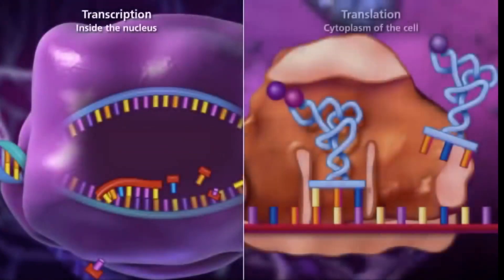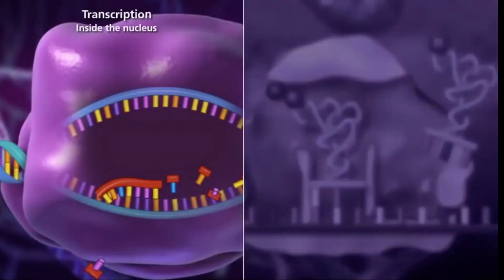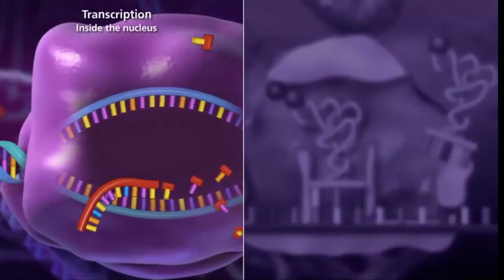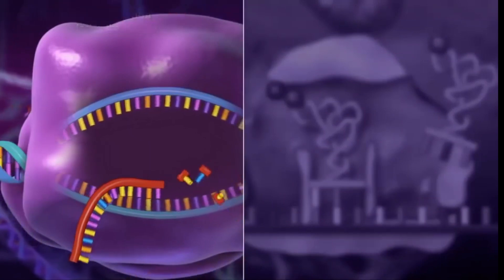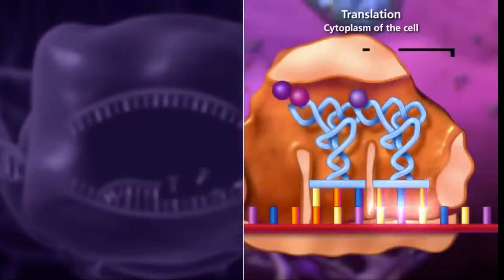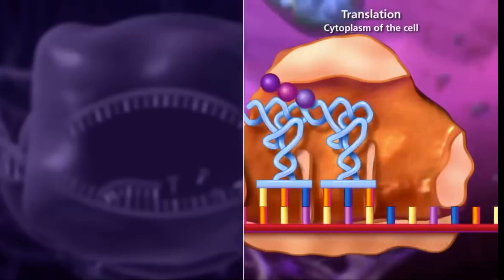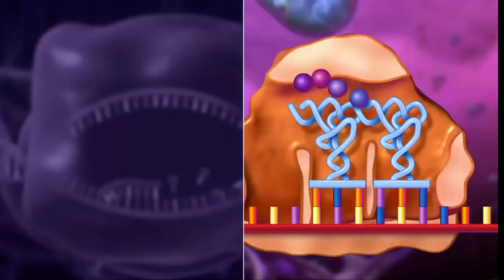If you recall the process of transcription and translation in our previous videos, our body responds to stimuli by producing proteins. This is done through the process of transcription where a discrete portion of your genome, called a gene, is copied into a temporary messenger RNA. And once this mature messenger RNA leaves the nucleus and goes into the ribosome, the process of translation occurs where the mRNA is used as a recipe to synthesize the needed protein.